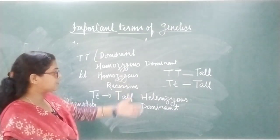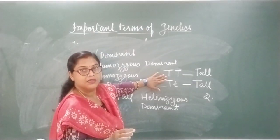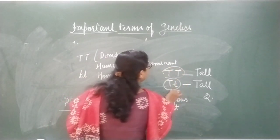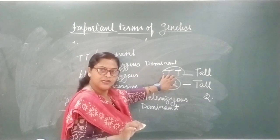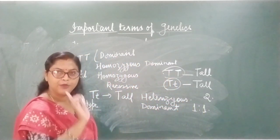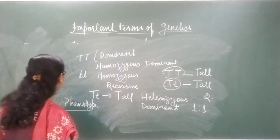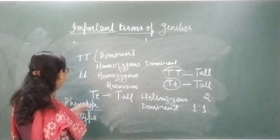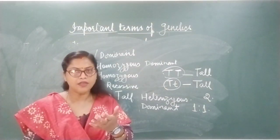What is the phenotype ratio? Two plants are tall, so the phenotype ratio is two. But if we look at the genetic ratio — one plant is homozygous and another is heterozygous — the ratio is one is to one. This genetic makeup of the genes is called genotype. So phenotype is the physical appearance, and genotype is the genetic makeup.